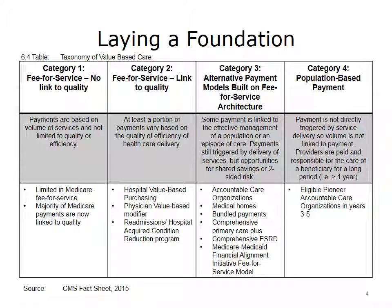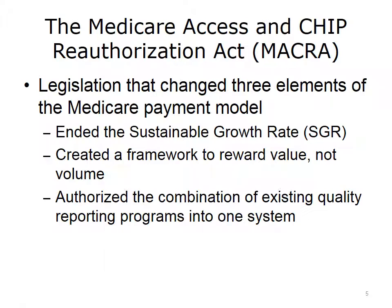For Category 2 payment models, how much a physician or hospital gets paid is not just based on the fee-for-service schedule — the negotiated payment for a specific activity — but in addition is also based on performance measured against quality standards. The Medicare Access and Children's Health Insurance Program, or CHIP Reauthorization Act, or MACRA, is the name of a piece of legislation that changed three elements of the Medicare payment model.